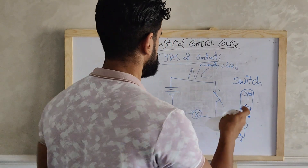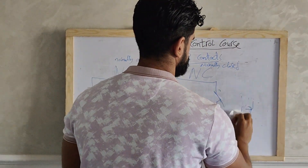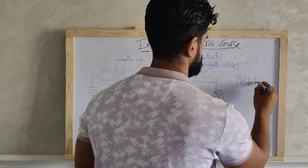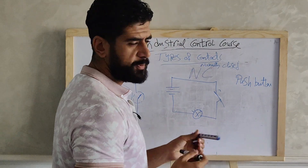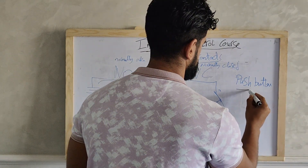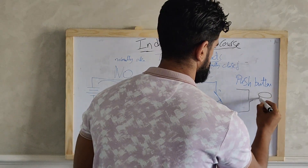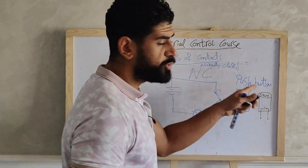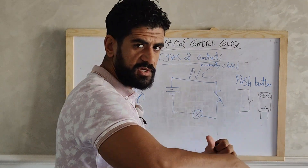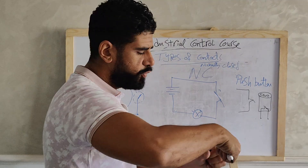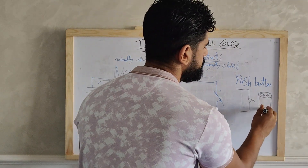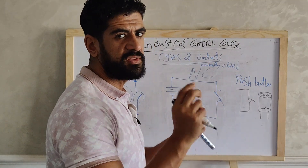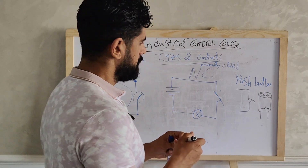We could also have a push button. A push button is similar to a switch — for example, a start push button — but unlike a switch, when we press a push button it will close, and when we release our hand it returns back to being open. With a switch, when we press it stays closed until we press again. This is the key difference between a push button and a switch.